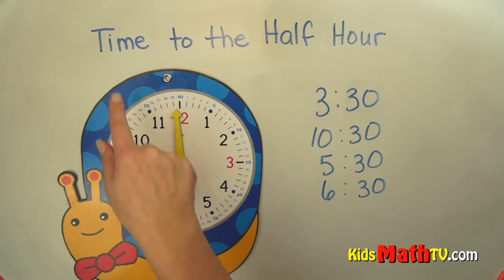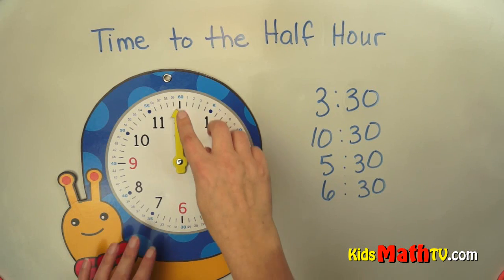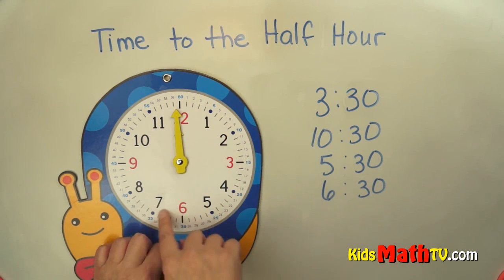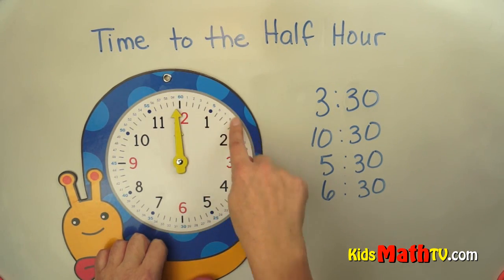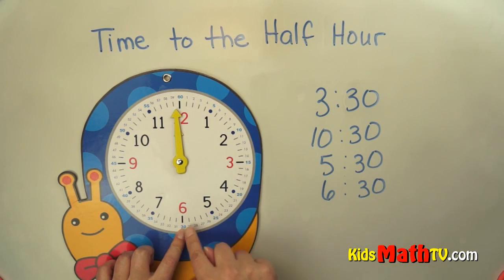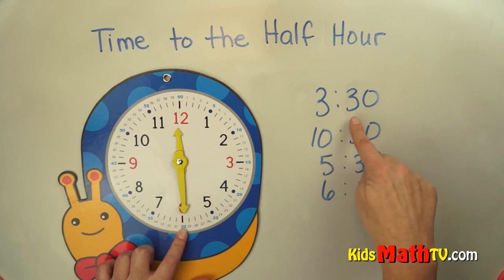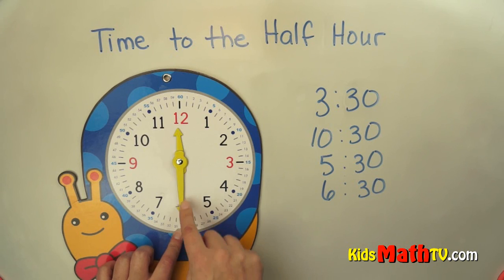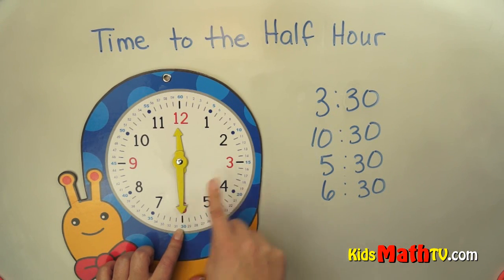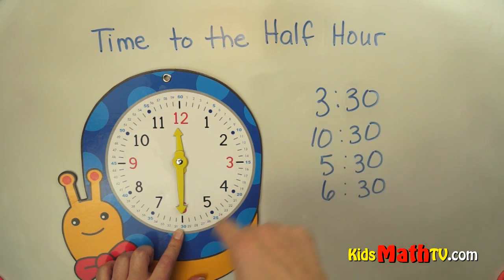In this lesson you will learn about telling time to the half hour. The whole hour is 60 minutes, so half of 60 is 30. Counting by fives: 5, 10, 15, 20, 25, 30. So the big hand — the minute hand — is always going to be on the six, or 30 minutes.